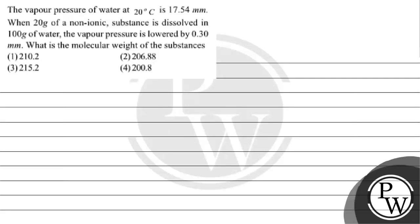Hello, let's read this question. The question says the vapor pressure of water at 20 degree Celsius is 17.54 mm. When 20 grams of a non-ionic substance is dissolved in 100 grams of water, the vapor pressure is lowered by 0.30 mm. What is the molecular weight of the substance?